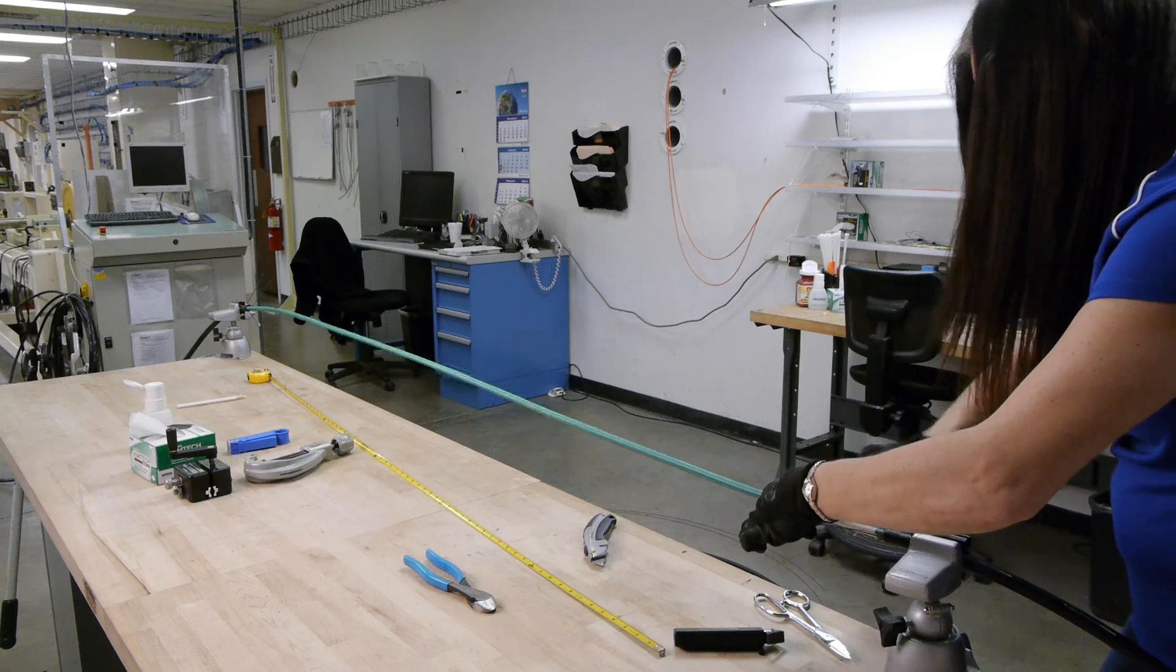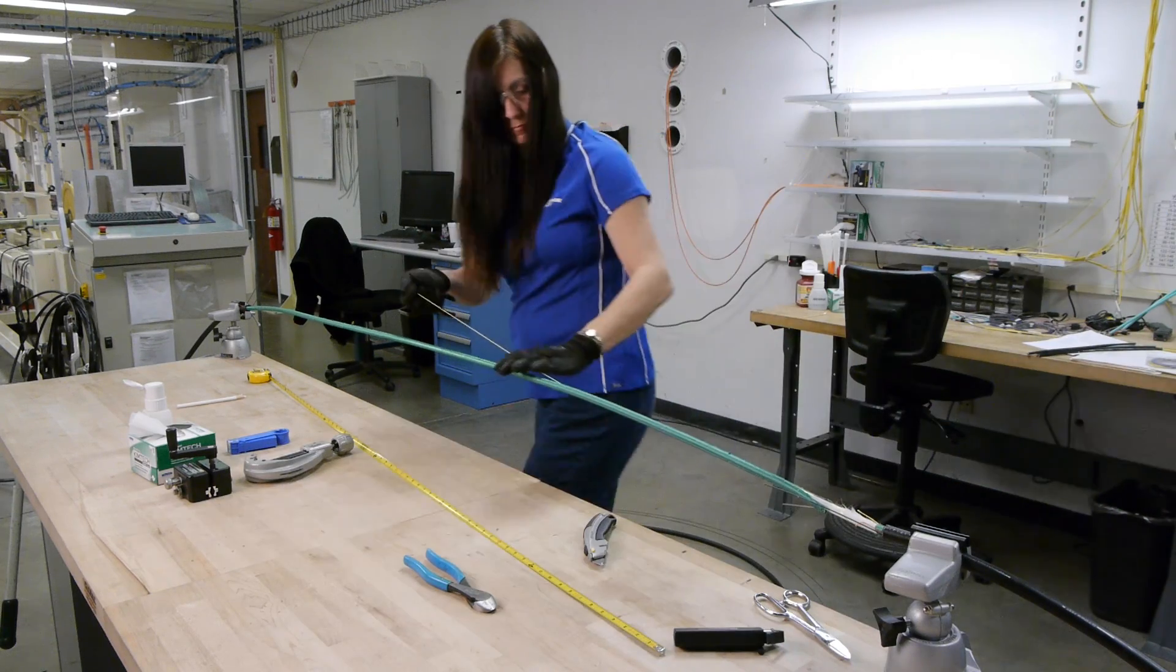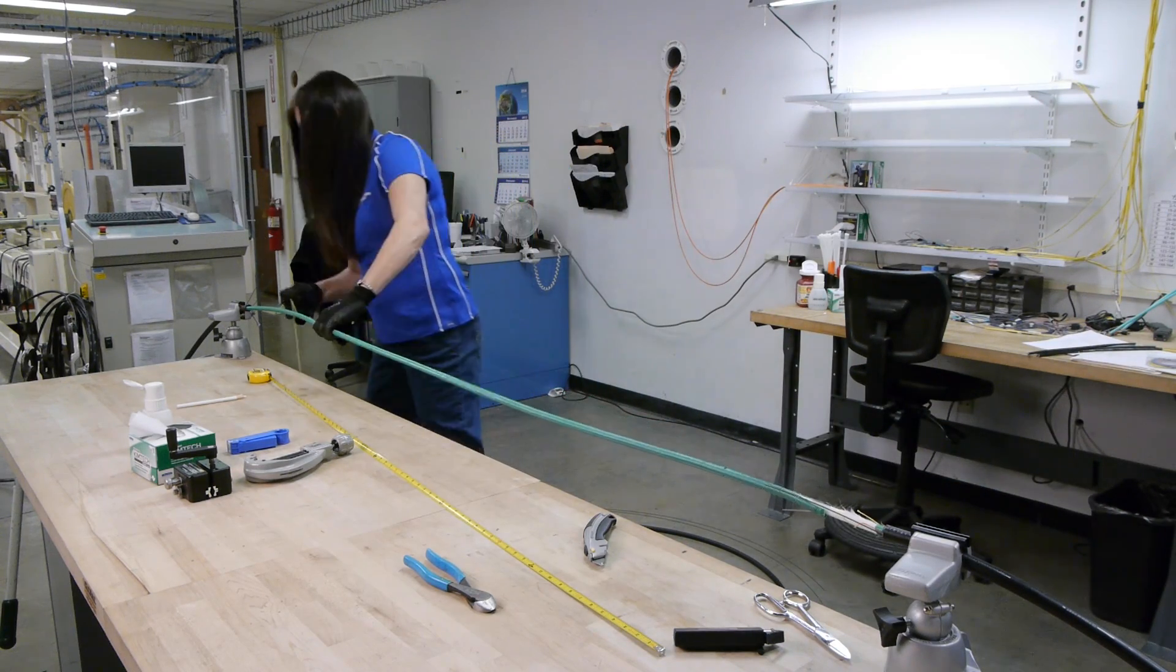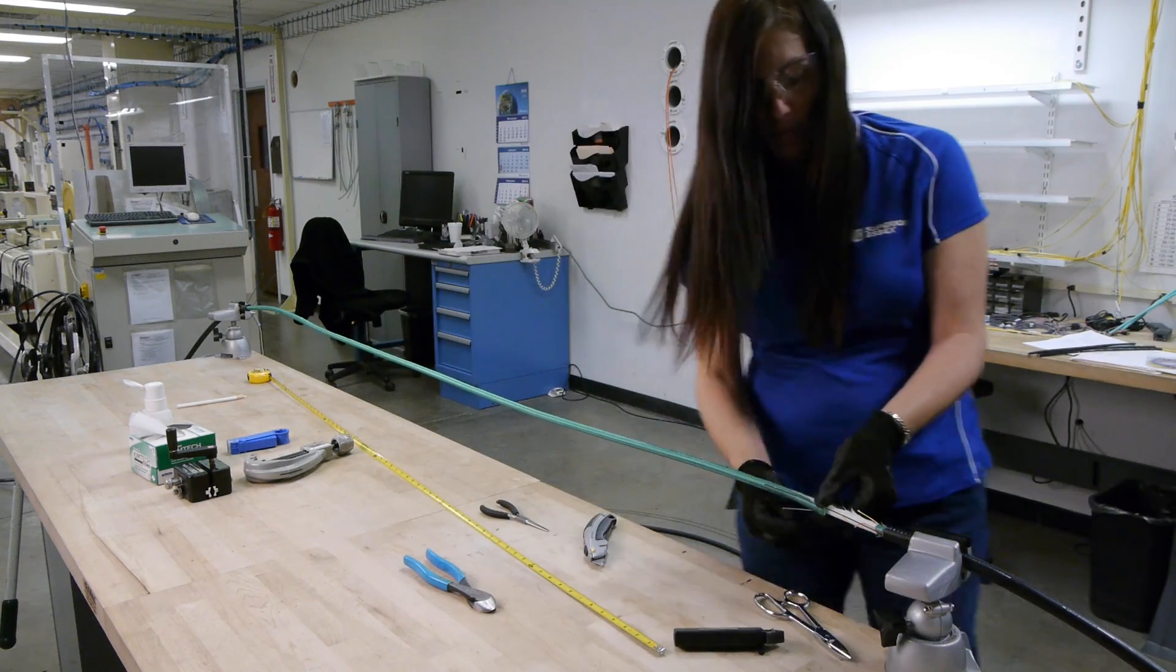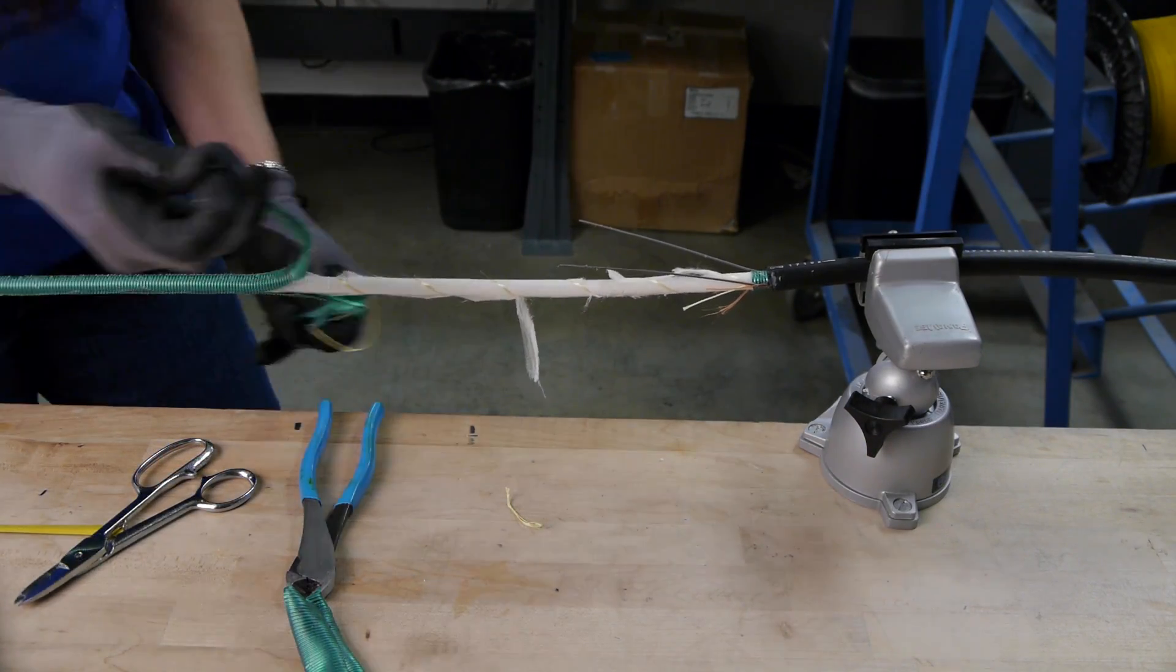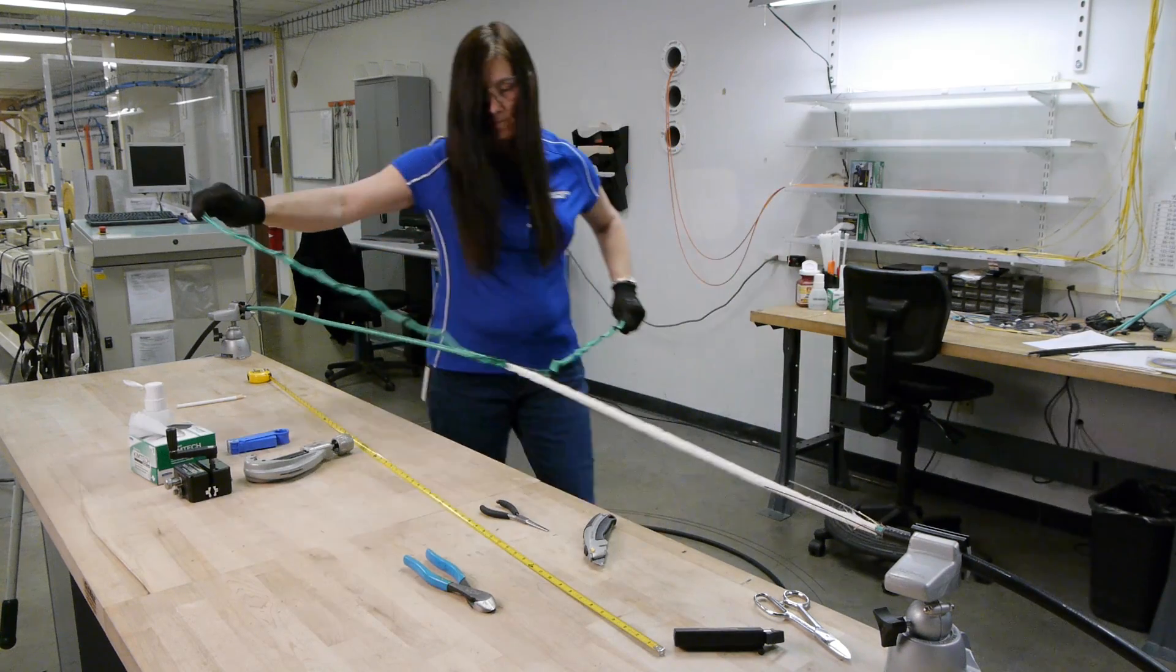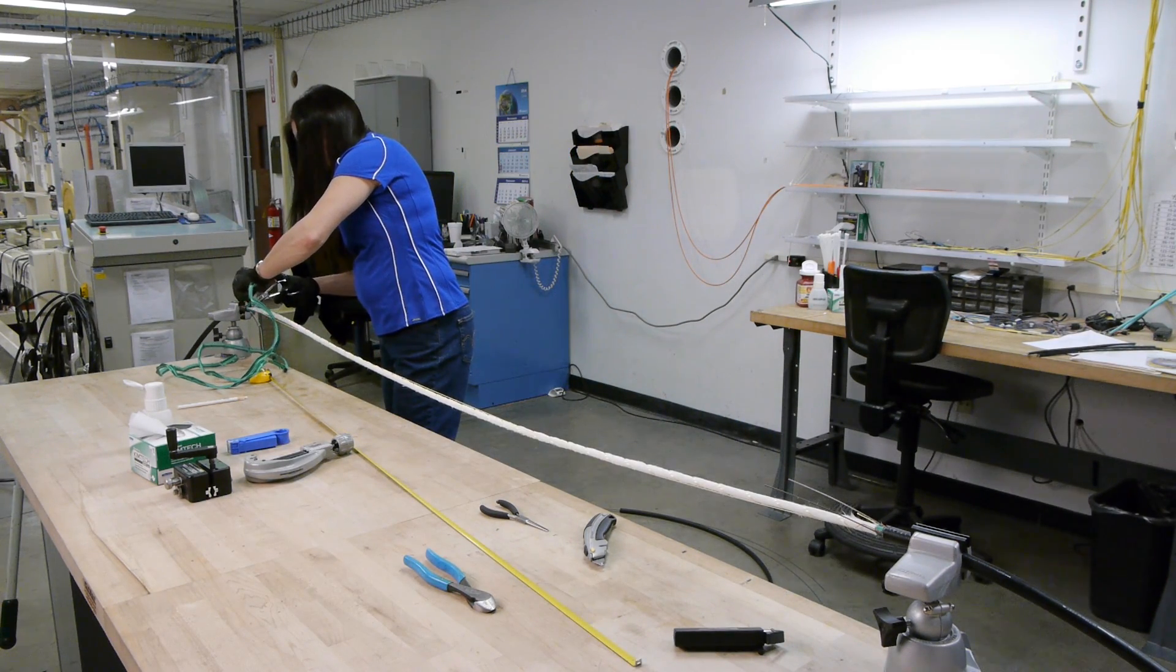Using needle nose pliers, wrap the pull strings and pull down the length of the armor. Remove armor. Armor may have sharp edges, so gloves may be necessary to ensure safety during the removal process.